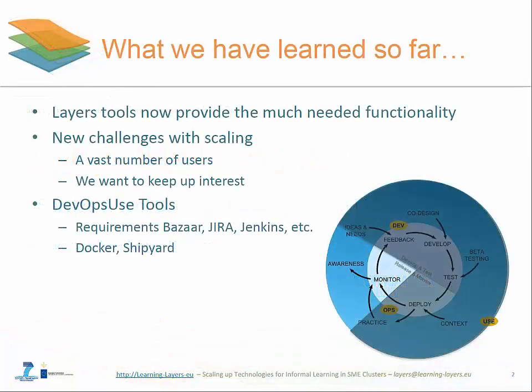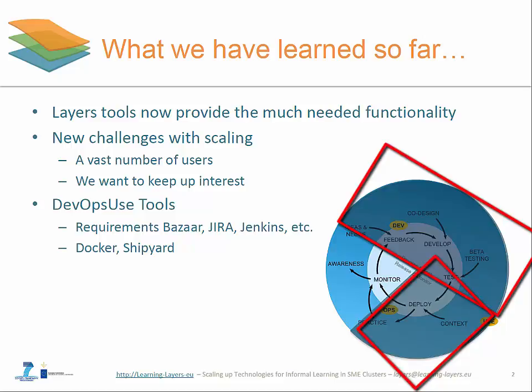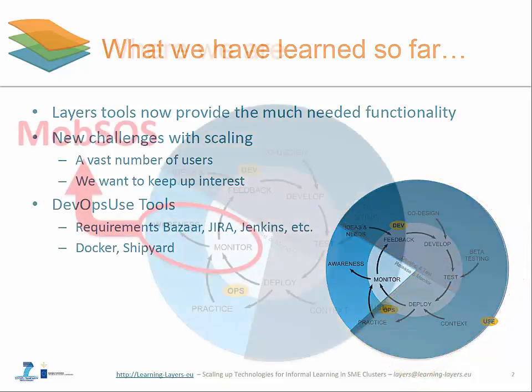In previous webinars, we traversed the Test and Develop semi-circle and part of the Release and Monitor semi-circle of the DevOps use lifecycle, with tools like Requirements Bazaar, Jira, GitHub, Jenkins, Docker and Shipyard. In the previous webinar, we covered large-scale deployment with Layers Box, Layers Adapter and Layers App Store.